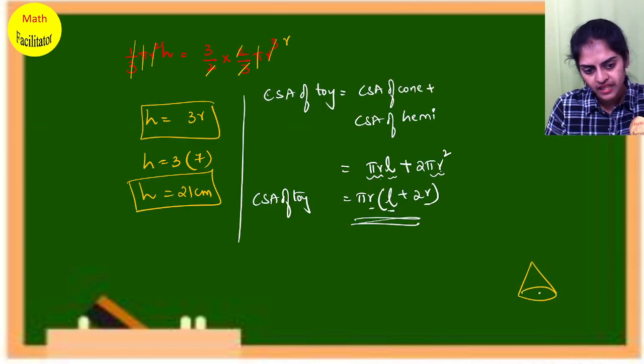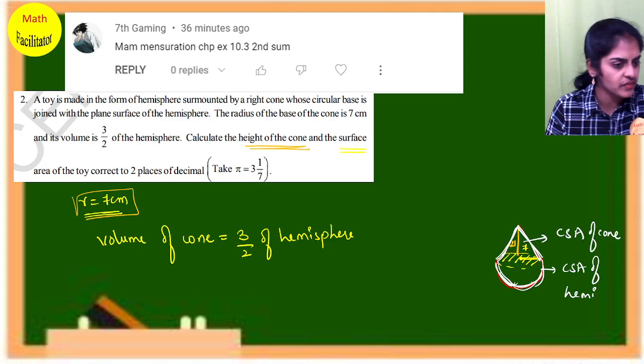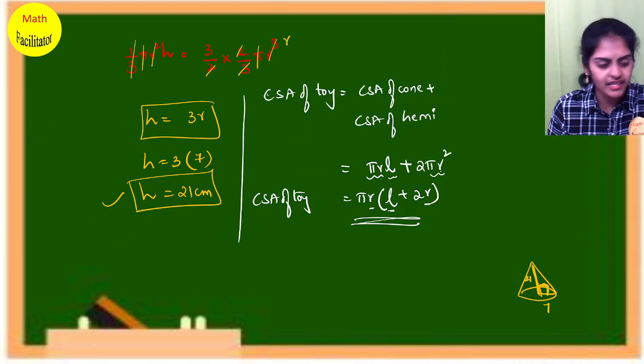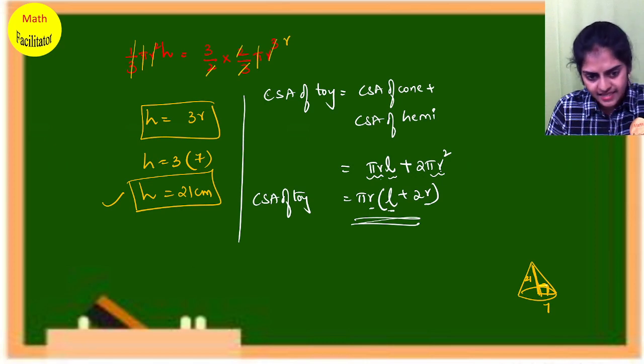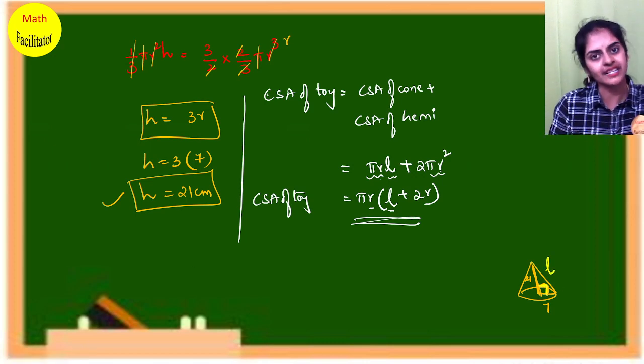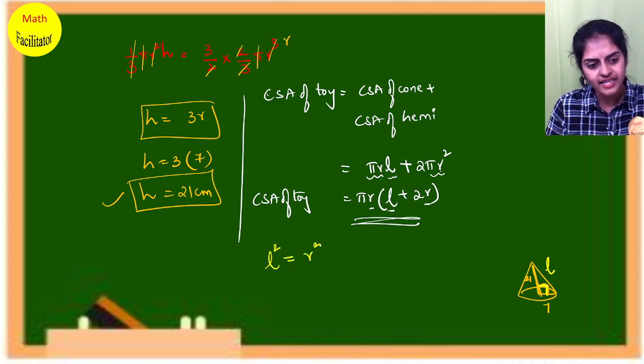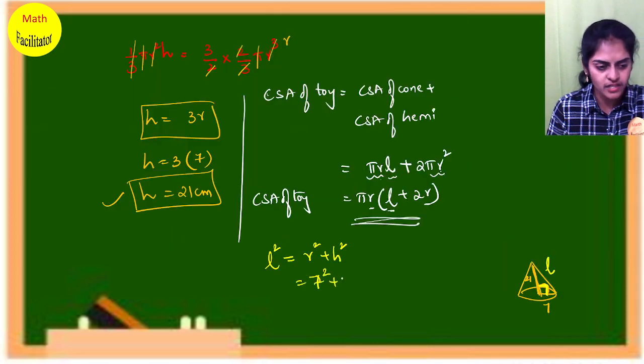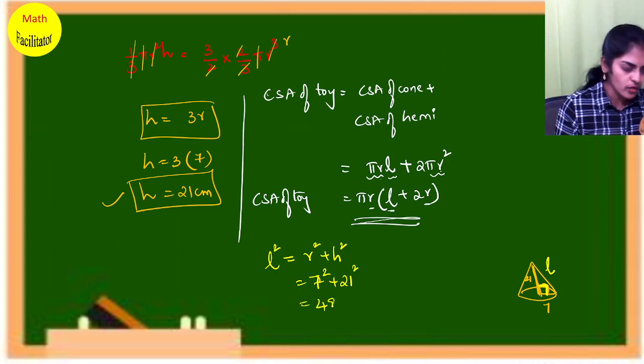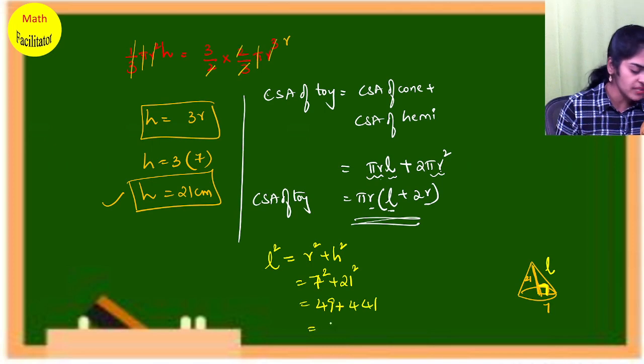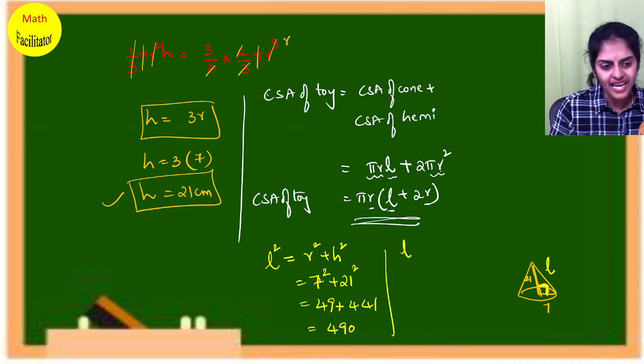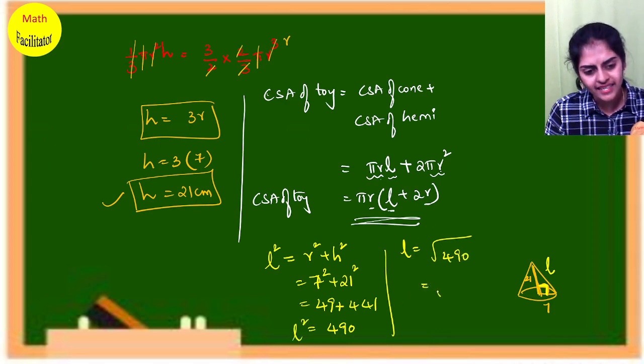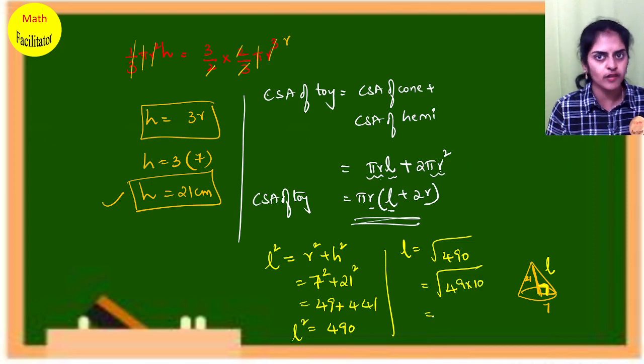L is the slant height of the cone. If the radius is 7 and the vertical height is 21, this is a right angle triangle. So slant height you can get using Pythagoras theorem: L² = R² + H². L² = 7² + 21² = 49 + 441 = 490. So L = √490, or √(49 × 10).